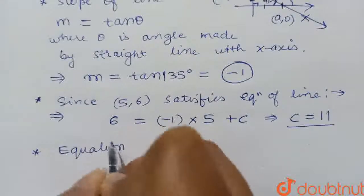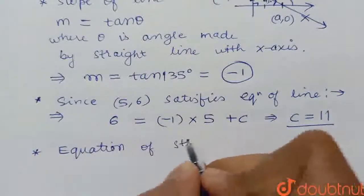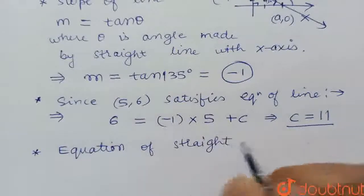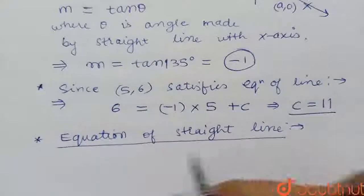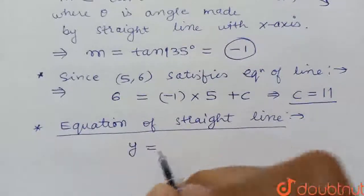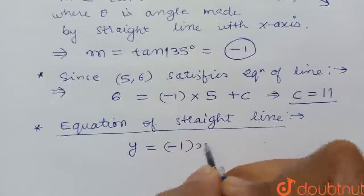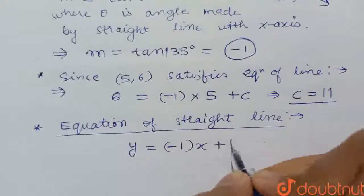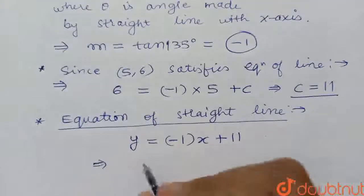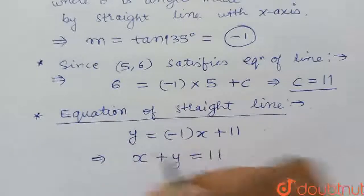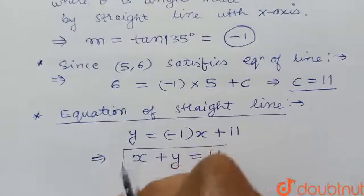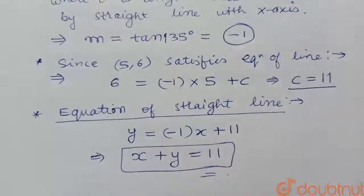This is what the question asked us to find, the straight line equation. We have found the equation: y = -1 × x + 11. So our straight line is x + y = 11. x + y = 11 is the answer. Thank you.